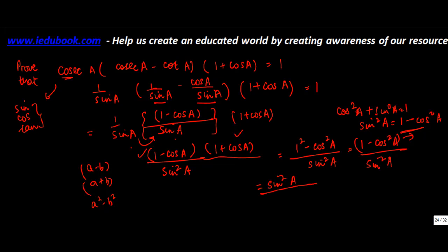So I can replace this 1 minus cos square A by sin square A upon sin square A, which is equal to 1, the right-hand side. So the trick in solving this was, whenever you get these cosec things, try to simplify them to the extent possible. Try to convert them into sine, cos, tan.